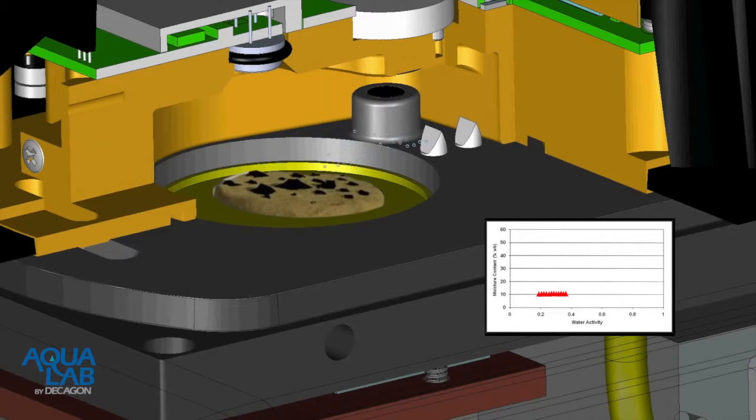The sorption isotherms produced by the DDI method have the advantage of fast analysis time, about two days, and extremely high data resolution.